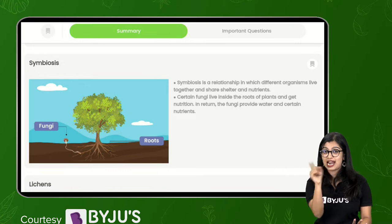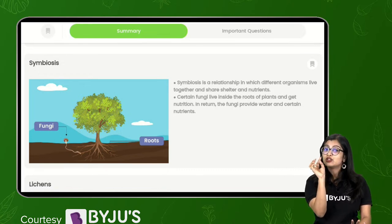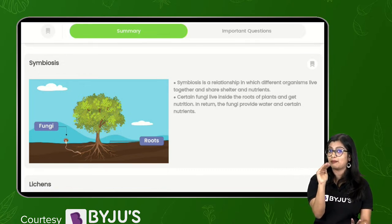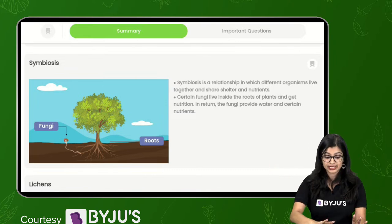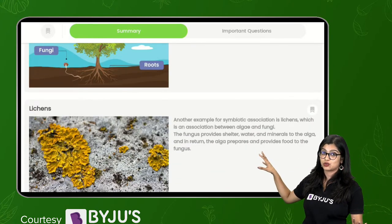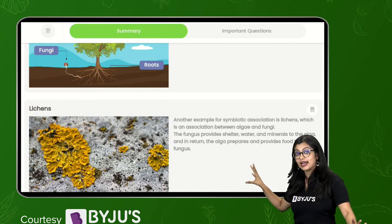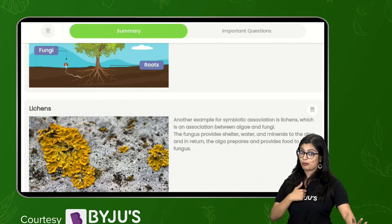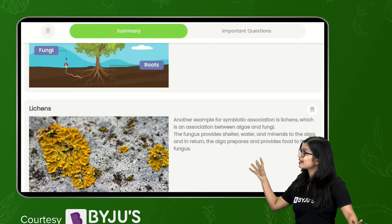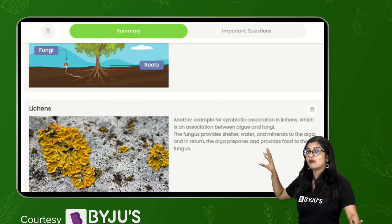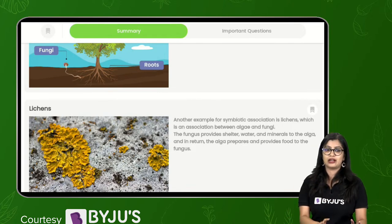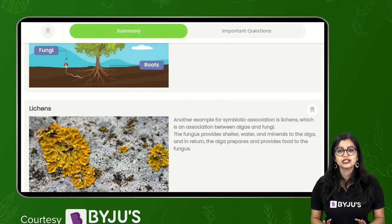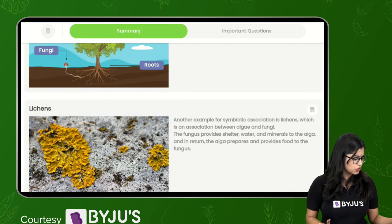Then you have symbiosis - they're like best friends who help each other out. A symbiotic association is when they help each other out. We see it in lichens, which is a symbiotic association between a fungi and an algae. Fungi cannot produce its own food, algae can produce its own food. So algae will produce food and give it to fungi, and fungi will provide protection. This is what the quick revision covers.